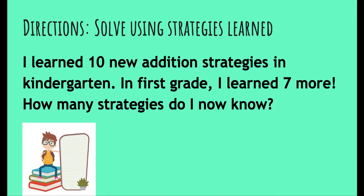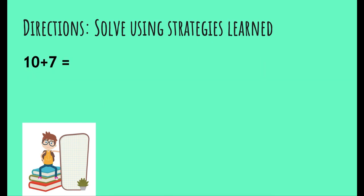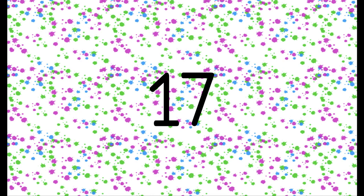Alright, it says: I learned 10 new addition strategies in kindergarten. In first grade I learned seven more. How many strategies do I now know? So we have 10 plus 7. This one is called making a group from 10 and counting on. It's pretty easy because you just start at 10 and count seven more: 10, 11, 12, 13, 14, 15, 16 — and the answer is 17.